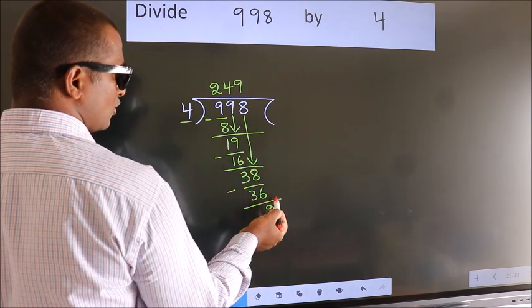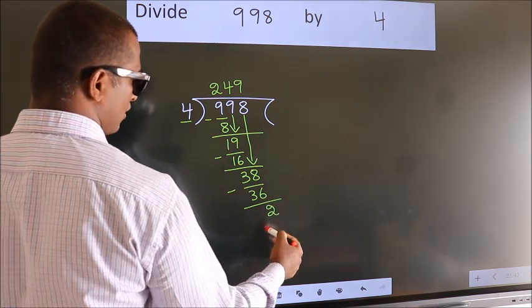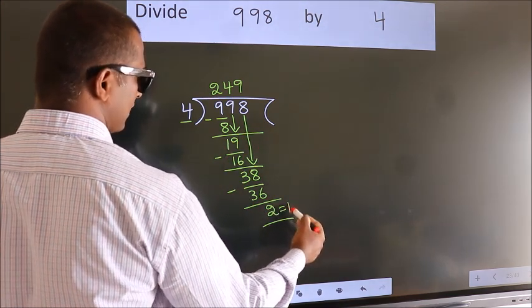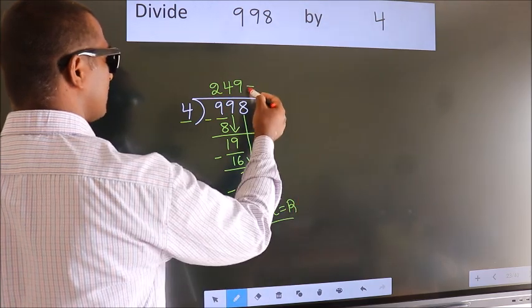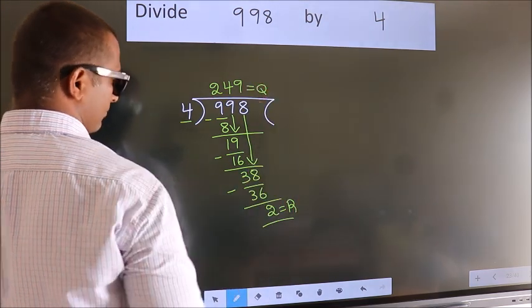No more numbers to bring it down. So we stop here. This is our remainder. This is our quotient. We check it out. Yes! Thank you.